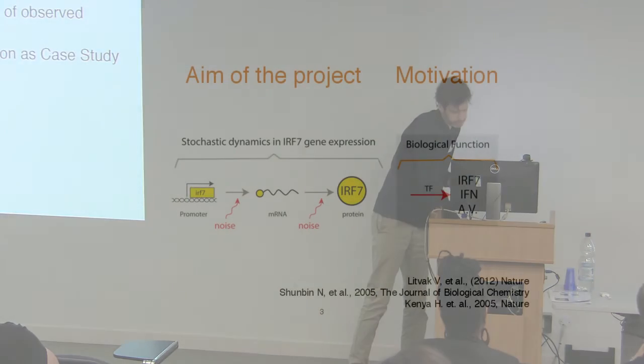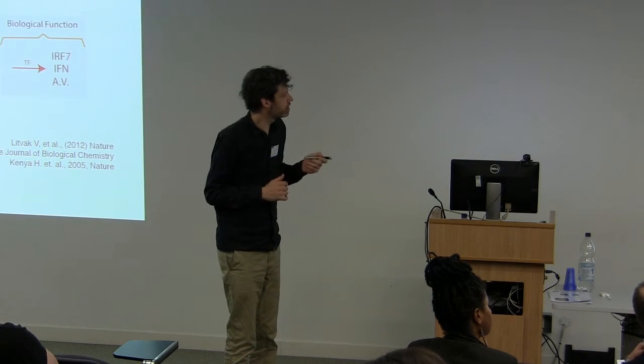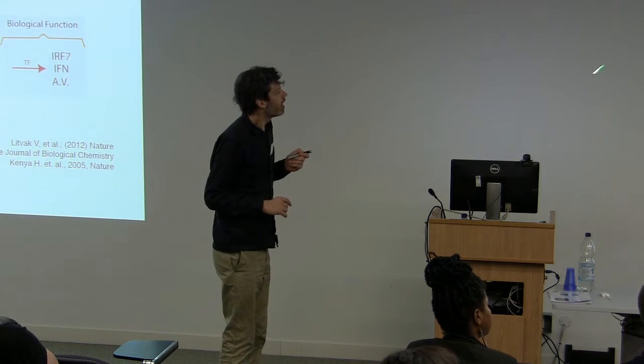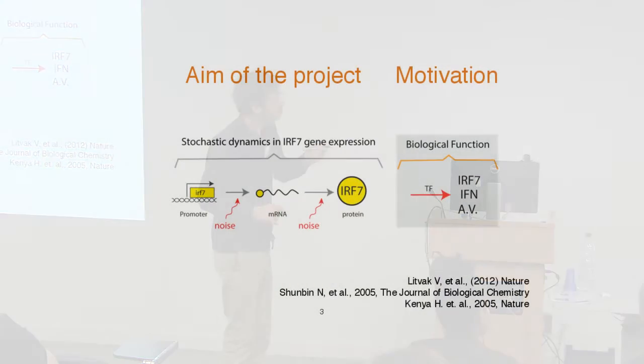What's going on here is that there have been experimental observations that in this specific pathway—interferon, JAK-STAT signaling, leading to the expression of IRF7 and other antiviral response proteins—there is observed stochasticity. We will see the experimental results in a while, and the noise can enter at several levels: in the transcription or translation events or also in the binding of the transcription factors.